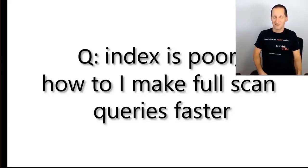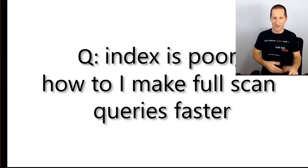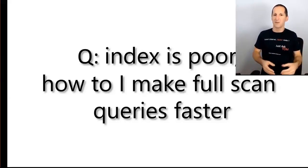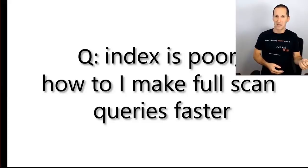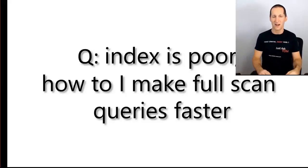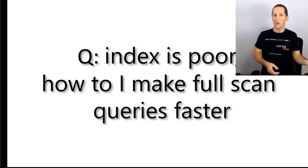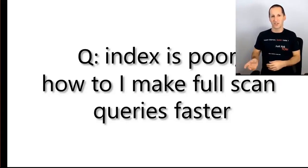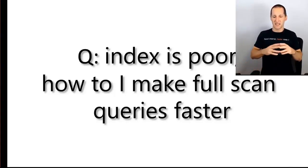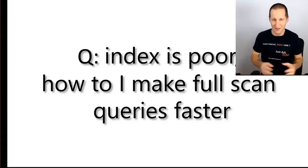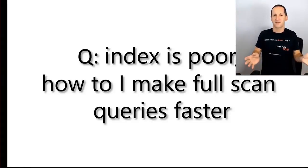My index is poor — how do I make full scan queries faster? To flesh this question out: indexes are great when you've got a small, selective amount of data to query out of a large table. But there's the exact opposite situation where no index is of use — for example, a table that only has two distinct values evenly distributed.